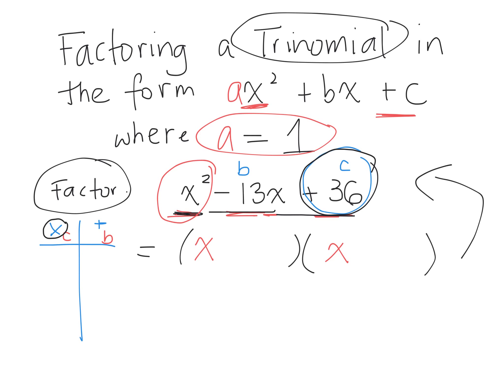6 times 6 is 36. Negative 6 times negative 6 is also 36. 1 and 36. Negative 1 and negative 36. 9 and 4 is 36 and negative 9 times negative 4 is 36. Are there any more factors of 36? 12 and 3. I'm not going to write that one because I ran out of space.